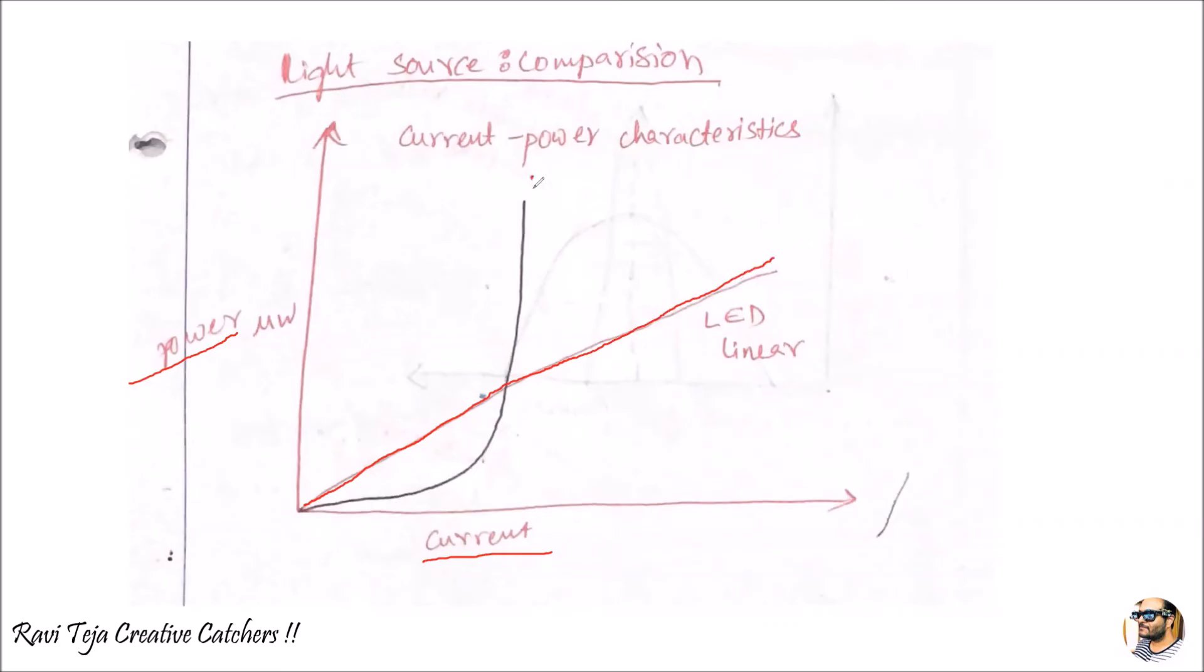Coming to the laser, as the current increases the power also increases, but after a threshold point, even though the current increases it produces a vast high output which keeps on increasing. Irrespective of the current, this laser will exhibit high power. This is non-linear.